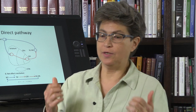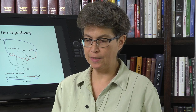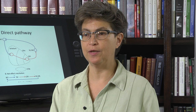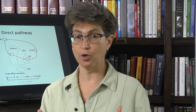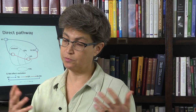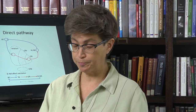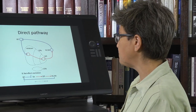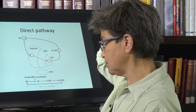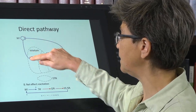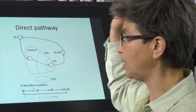The direct pathway is a really critical pathway of the basal ganglia. It is the pathway that is most directly affected in Parkinson's disease, which is clearly the most common basal ganglia disorder. So what is the direct pathway? It starts in motor cortex and the message comes into the striatum via unmyelinated axons.